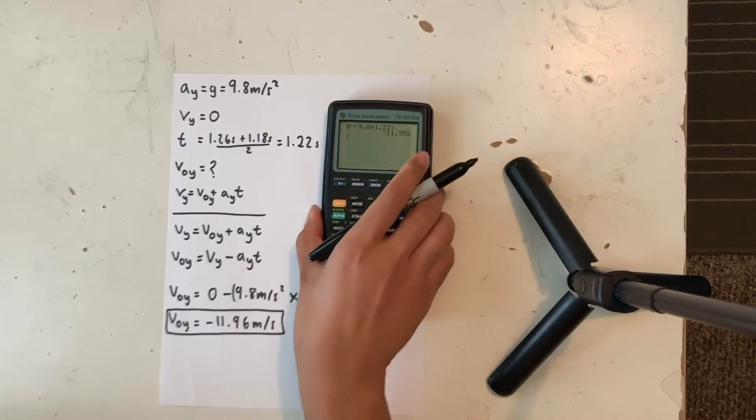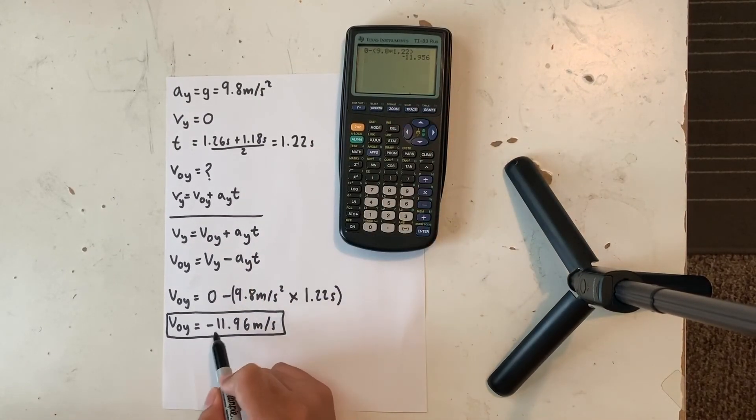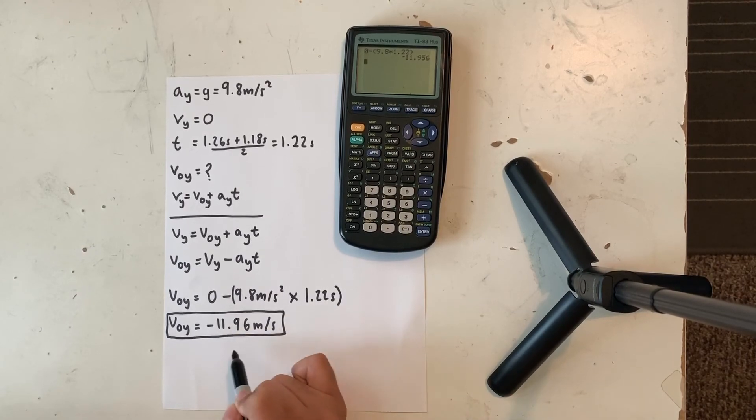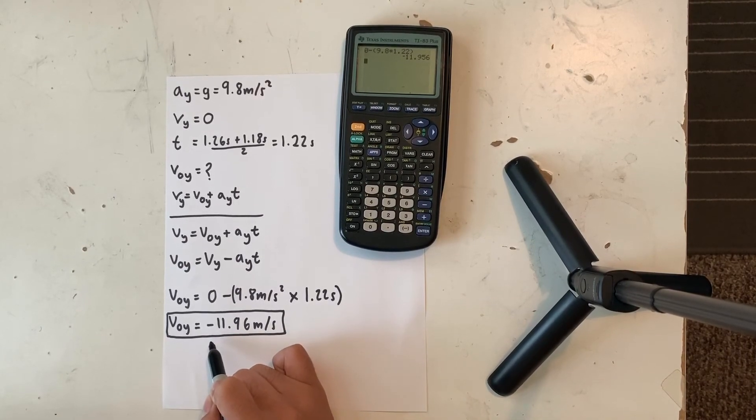Once I plug this into the calculator, I'm going to get a value for initial velocity which is equal to negative 11.96 meters per second. The reason being negative is because I'm going in the downward direction.